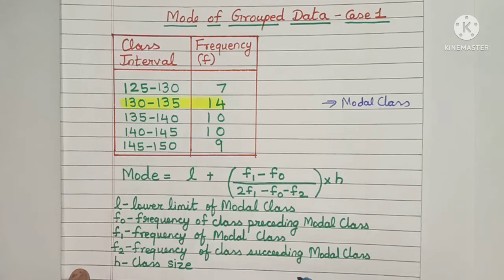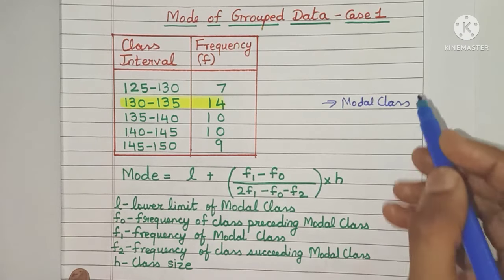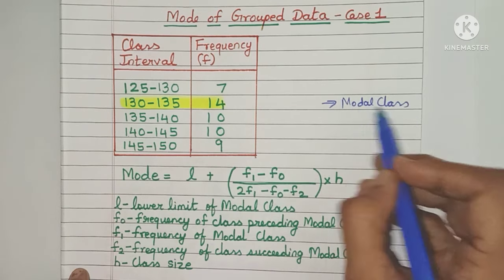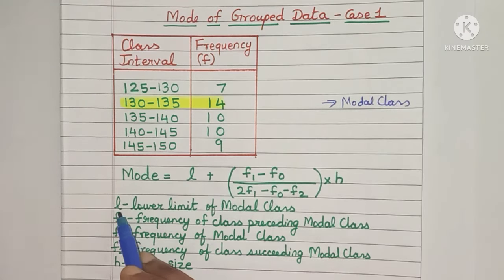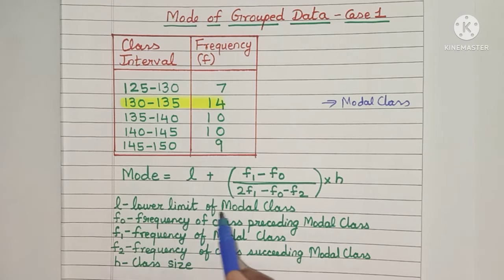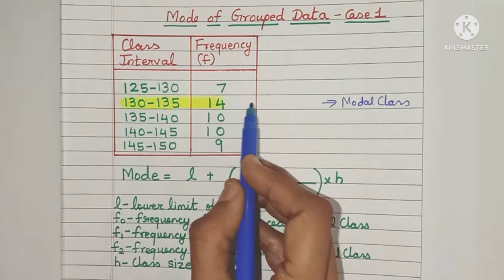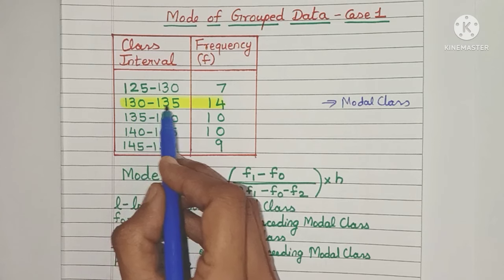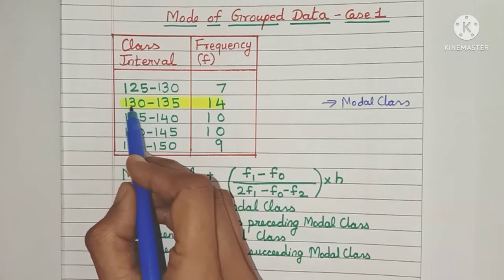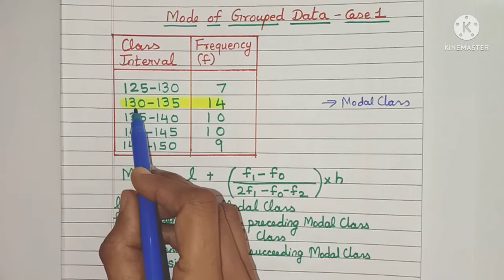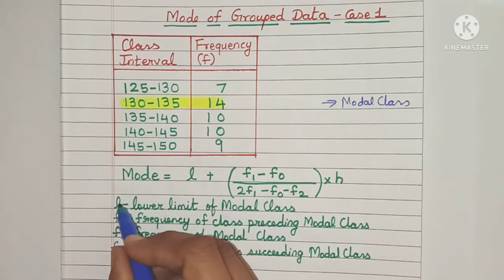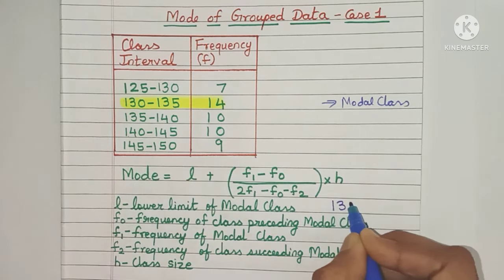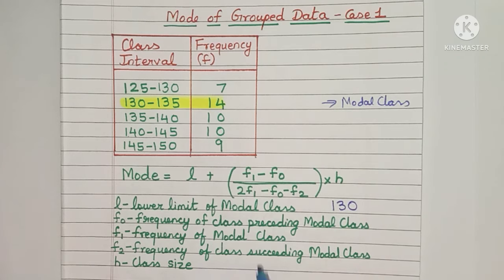We can easily find all these values now that we know what the modal class is. L is the lower limit of the modal class. Here the modal class is 130 to 135, so the lower limit is 130. That means L will be 130.